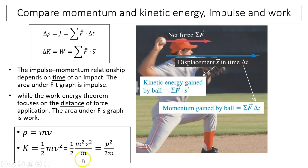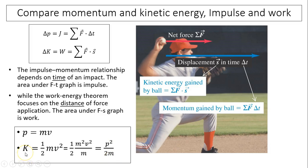Here is the mathematical relationship between momentum and kinetic energy, which can be useful in many problems. Since p equals mv and K equals ½mv², we can manipulate the equations: multiplying and dividing by m gives p squared over 2m equals K. So kinetic energy equals p² divided by 2m.